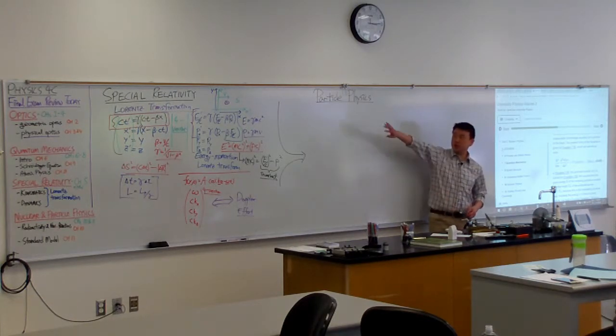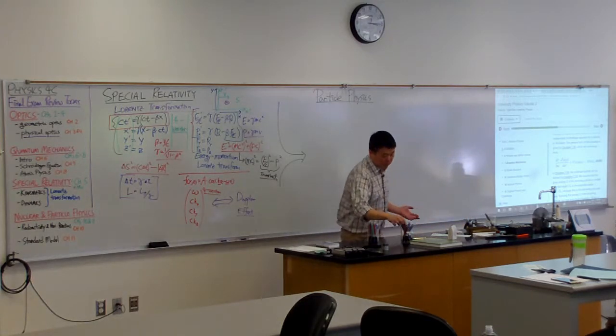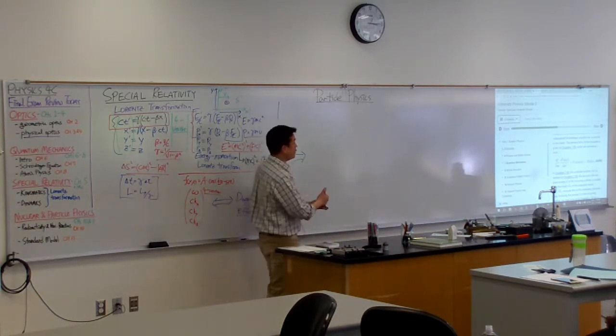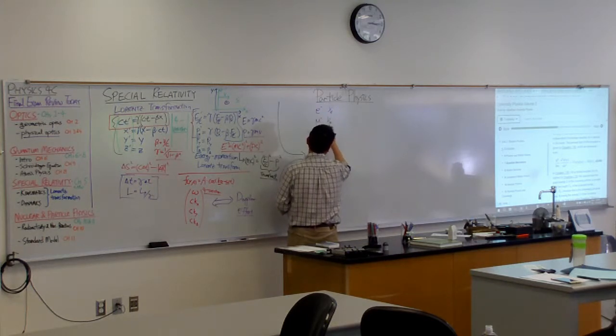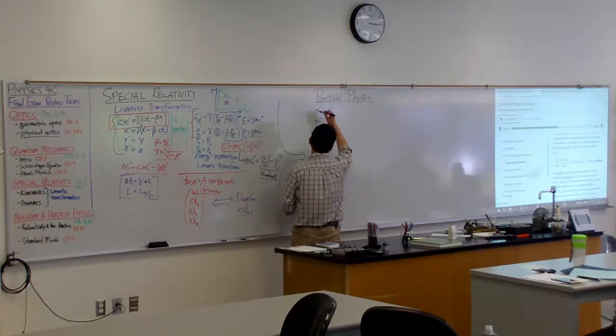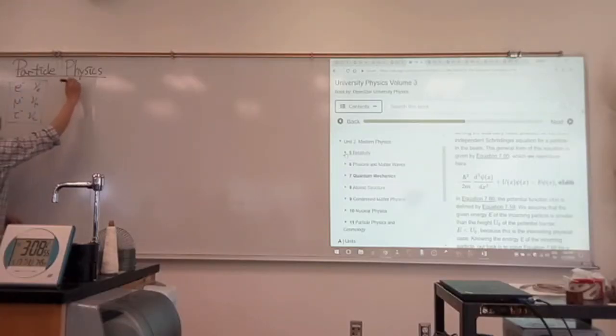As much as a big chunk of particle physics is describing the standard model and all the particles they found - electrons, neutrinos, muon, muon neutrino, tau lepton, tau neutrino - these are the leptons. And you have the quarks: down, up, strange, charm, bottom, and top. And the other mediator bosons like the photon, W boson, Z boson, gluon, and the scalar Higgs boson.